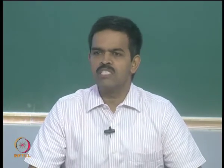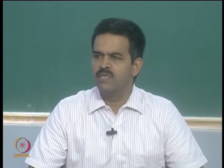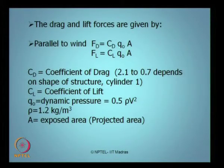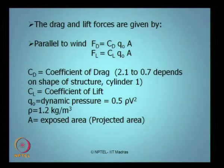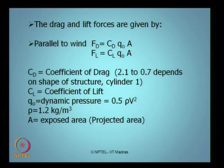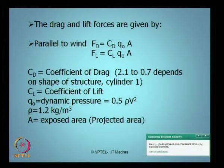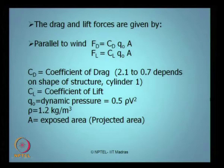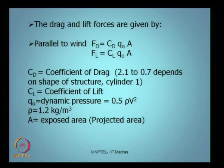The question is how to estimate quickly the drag and lift forces on the members of offshore structures. The drag force parallel to wind is given by C_D × Q_0 × A, whereas the lift force is given by C_L × Q_0 × A, where A is the exposed projected area. Q_0 is the dynamic pressure which equals half rho V squared, where rho is the density of wind. C_L and C_D are respectively the lift coefficient and the drag coefficient, and their values depend on the shape of the structure as available in offshore design guidelines.